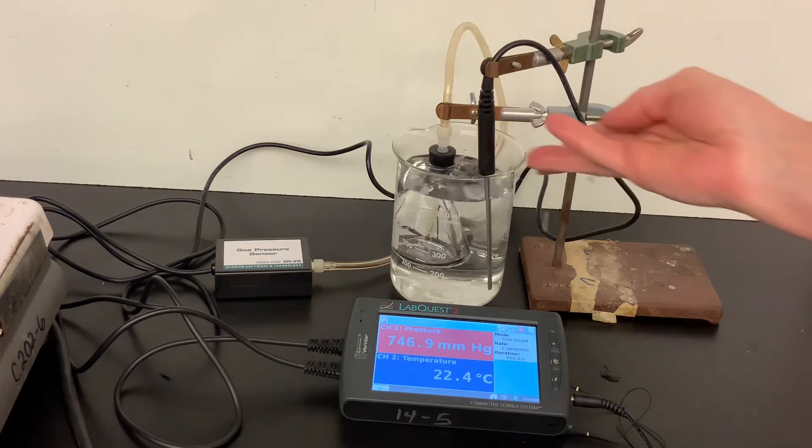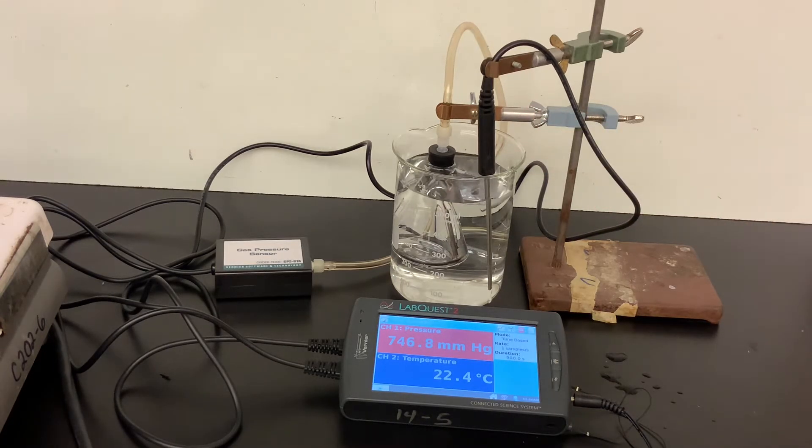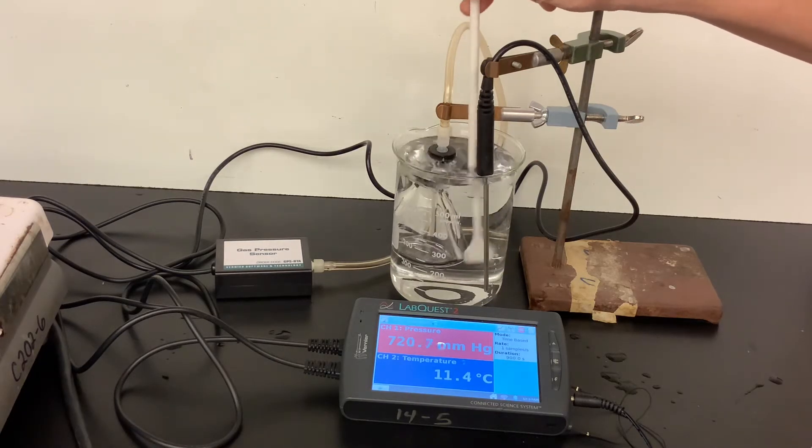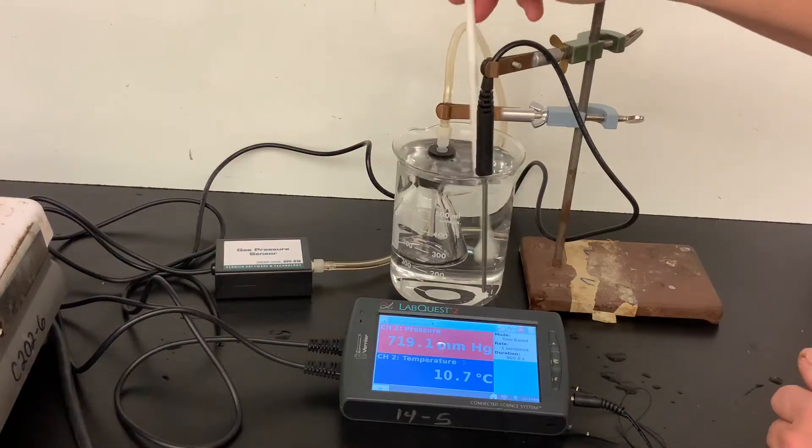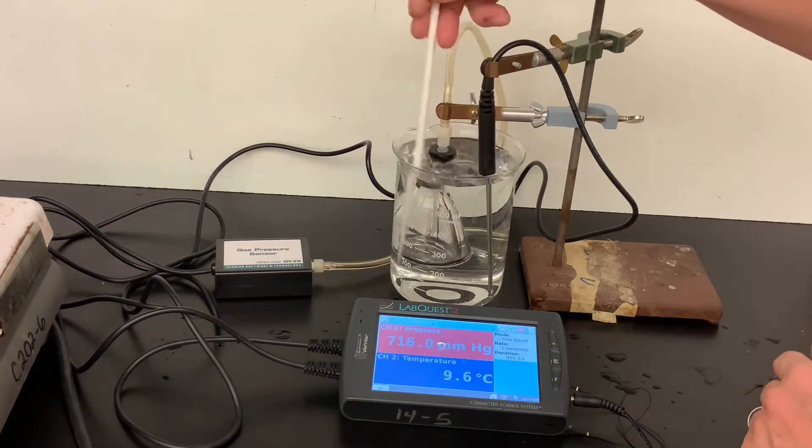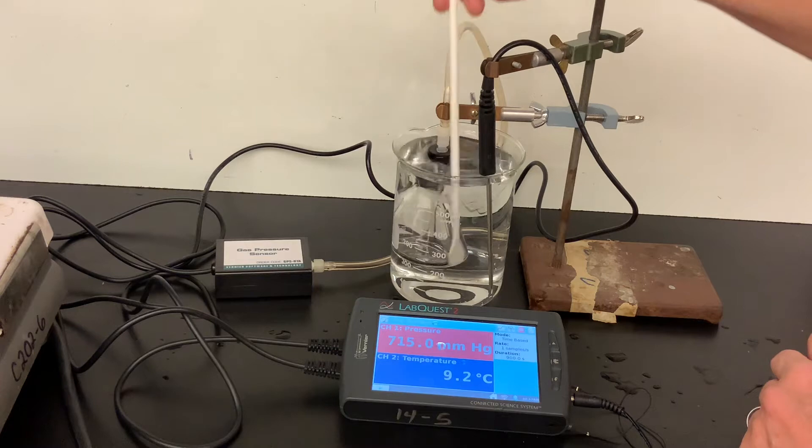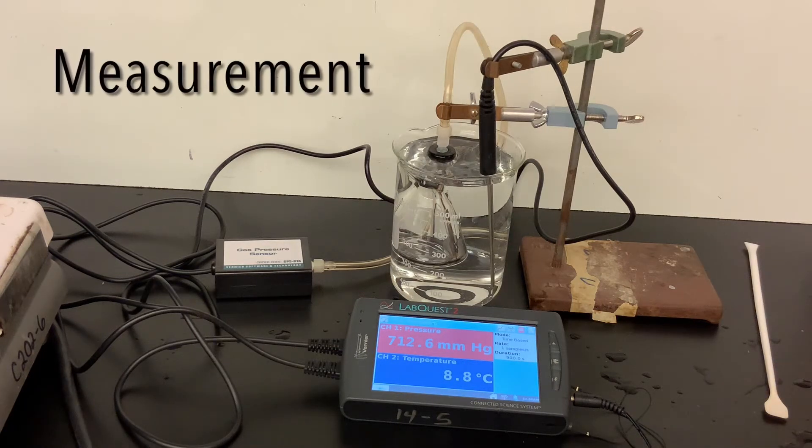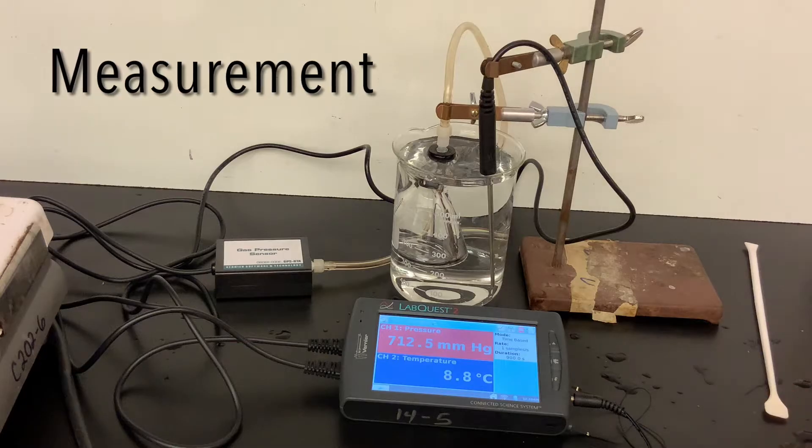Then we'll watch ice being added, which obviously is going to cool the temperature down and fast stirring, until the temperature stops changing and we achieve a stable, steady pressure. Go ahead and make another reading and add that to your data table.